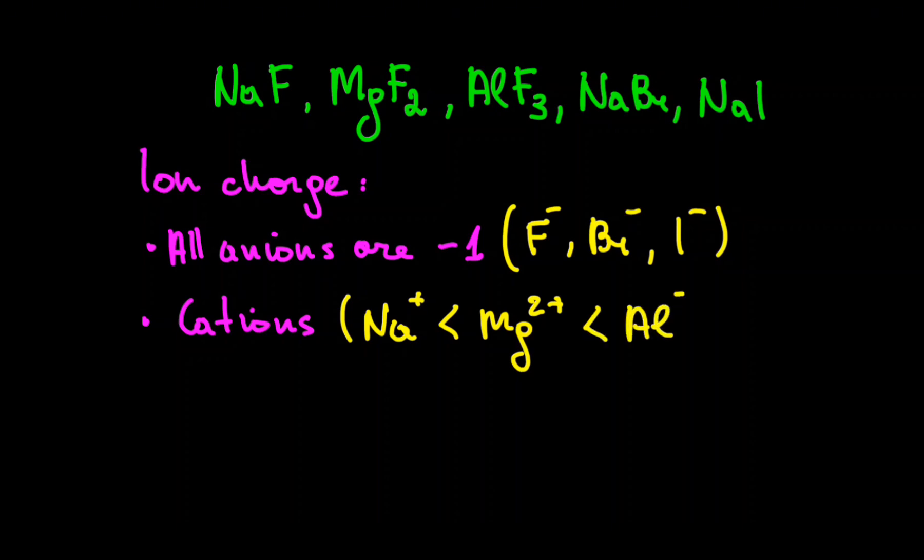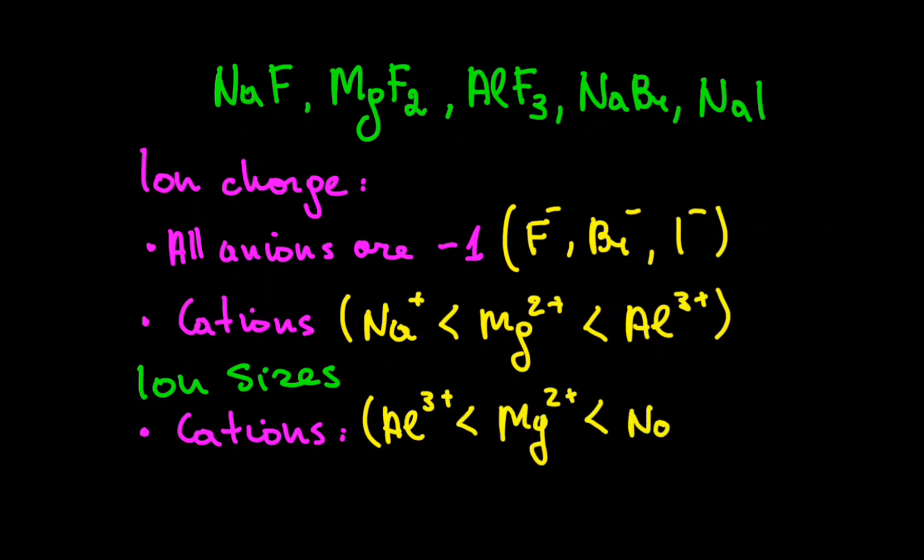Next, let's look at ion sizes. For cations, aluminum is the smallest one, then magnesium, and lastly sodium. For anions, fluoride minus, then bromide minus, and the biggest one is iodide minus.